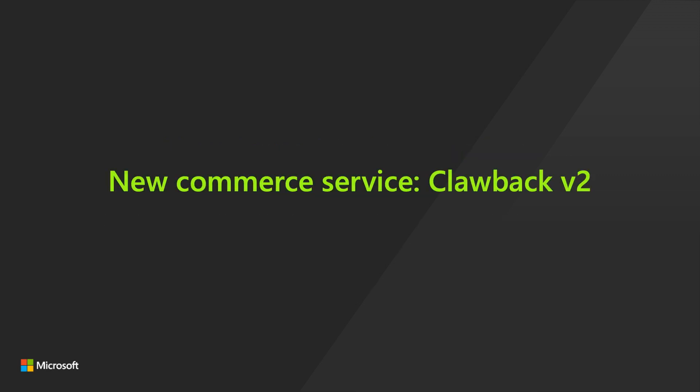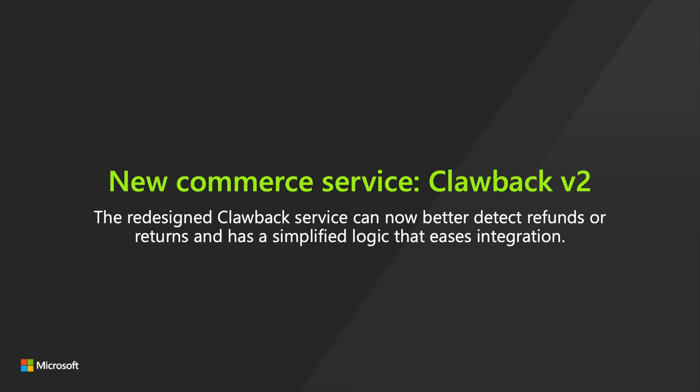New Commerce Service, Clawback V2. We've redesigned Clawback so that partner services can detect consumable products that were refunded or returned. They can take the appropriate action and remove the consumable balance on the game service side. In this redesign, we've also simplified the flow and logic around handling refund notifications to be more straightforward. It's now much easier to integrate with the Clawback service to detect when players receive refunds for products already redeemed in-game. This helps developers prevent fraudulent returns of consumable products and protect their revenue streams.